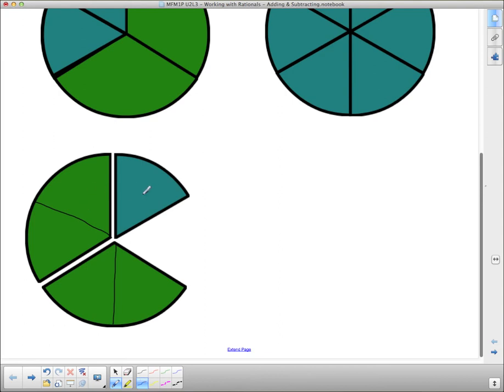And if they're all in sixths, then I can actually put them together. I've got 1, 2, 3, 4, 5 sixths in total. So now I can make a representation of what the actual sum of these two things are. So 2 thirds plus 1 sixth is actually equal to 5 sixths.